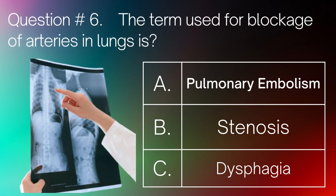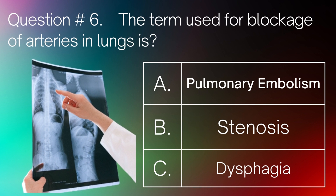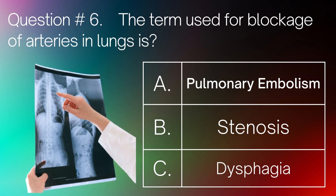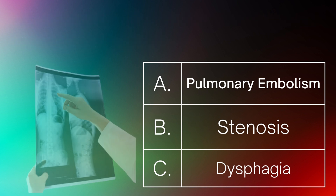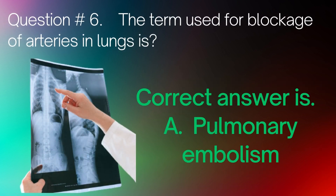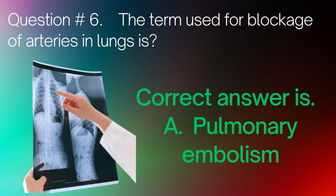Question number 6. The term used for blockage of arteries in lungs is: A. Pulmonary embolism. B. Pulmonary stenosis. C. Dysphagia. Correct answer is A. Pulmonary embolism.